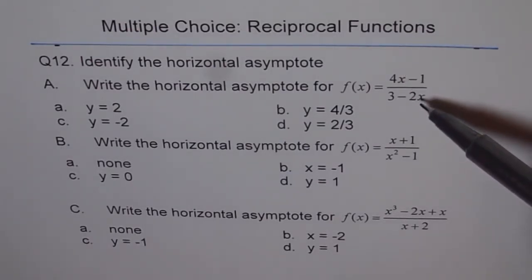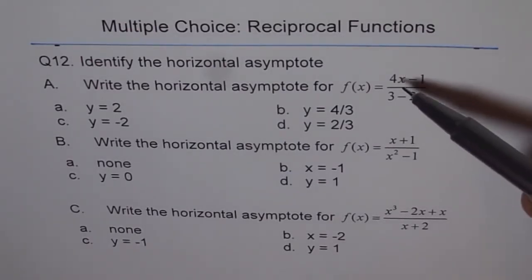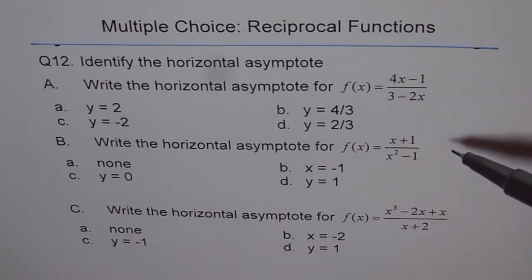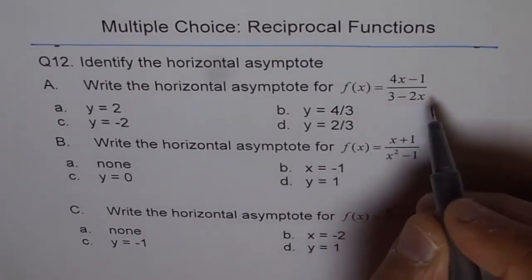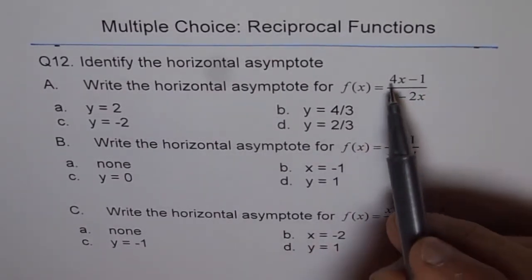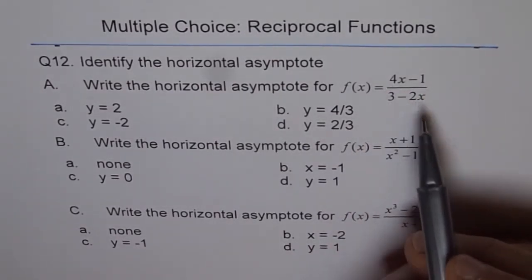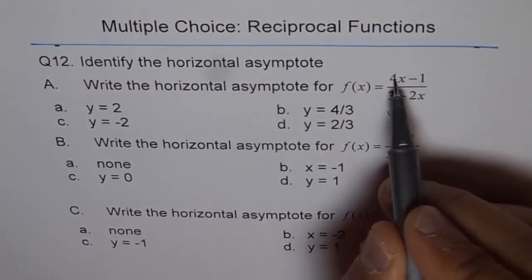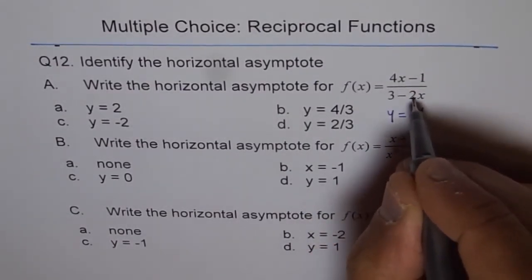Let's write down the answer and then match with the choice. What should be the horizontal asymptote? Degree of numerator and denominator is the same, and therefore we do have a horizontal asymptote. The horizontal asymptote is the ratio of leading coefficients.